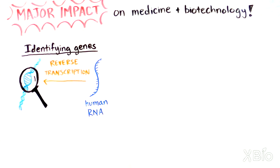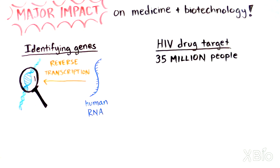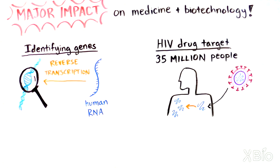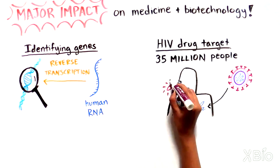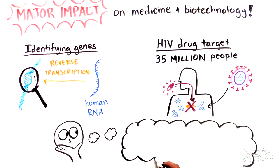Another important example is HIV, the retrovirus that causes AIDS and affects 35 million people worldwide. HIV uses reverse transcriptase to replicate and spread. Thanks to Baltimore and Temin's discovery, physicians now use medicines that block reverse transcriptase to treat patients with HIV.